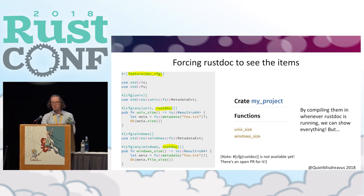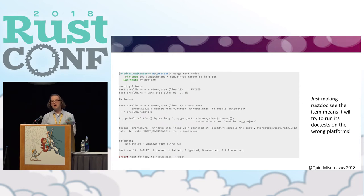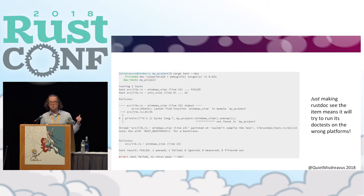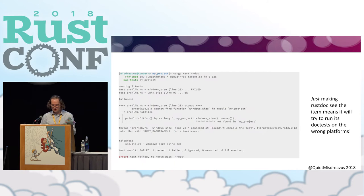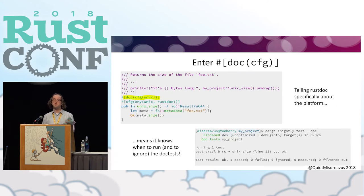Cool — problem solved, right? Kind of. Say you have doc tests on these items. Now you need to build and execute those tests as executables, which means you need to link against the platform libraries, which may not be available on the platform where you're running Rustdoc. I made a couple of empty doc tests that just call the platform functions, and running them on a Linux system shows the Windows size function is not available because I'm not running on Windows. That's where the doc CFG attribute comes in.